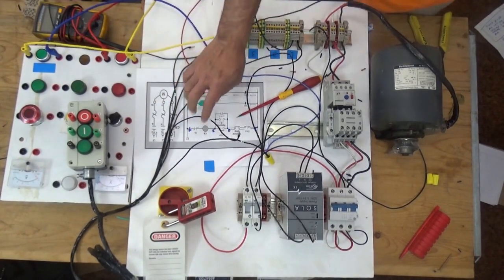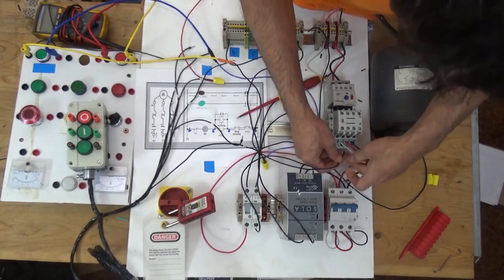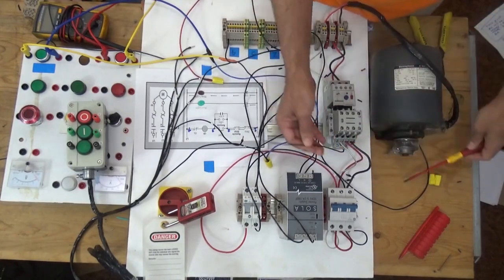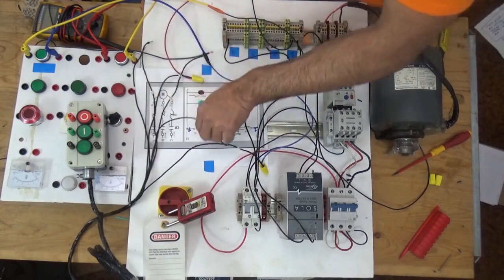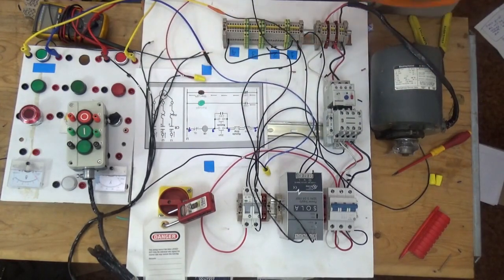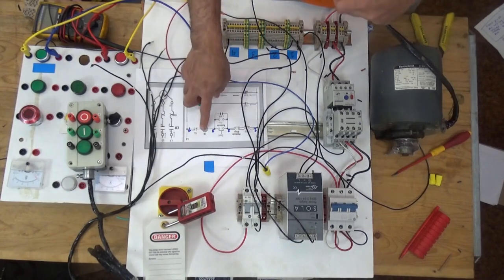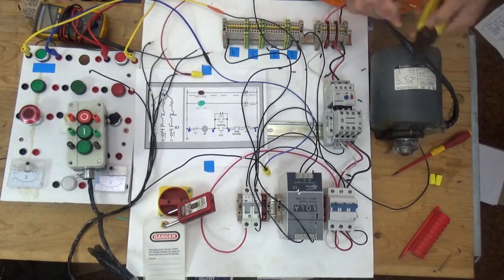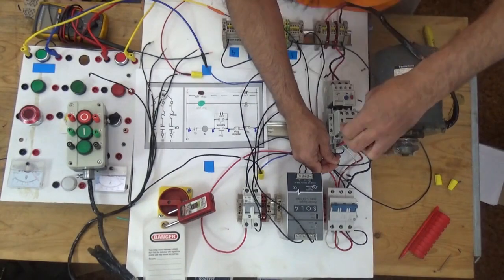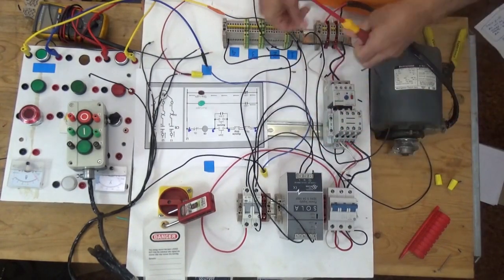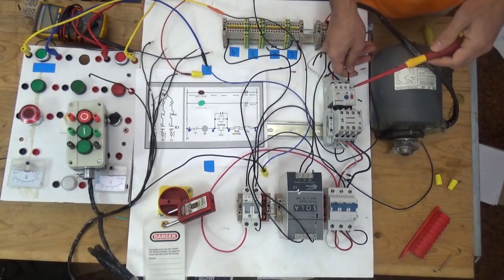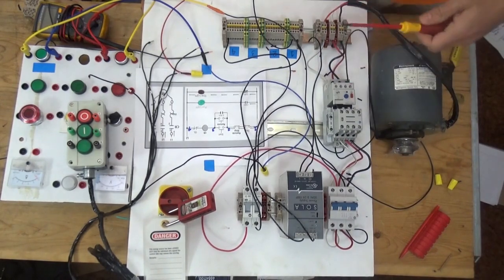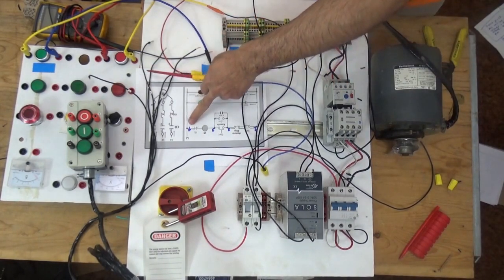Going to our A1 of our relay, of the magnetic contactor. A2 is going to overload relay. Overload relay normally closed here, NC, and from NC going to line four.